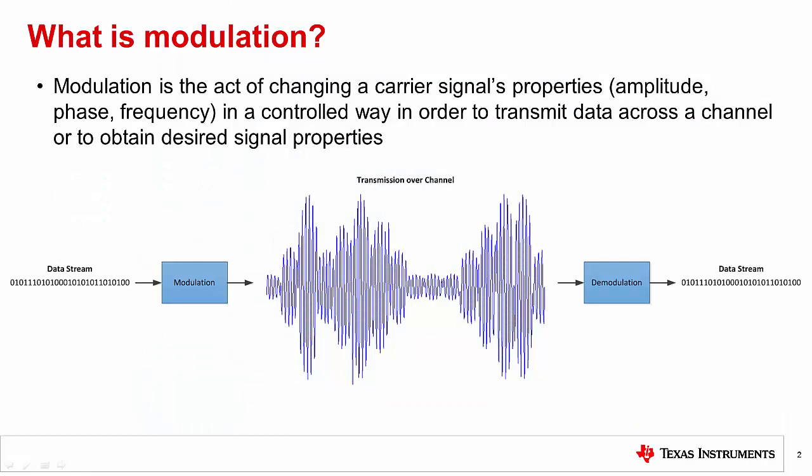First, let's discuss basic modulation. Modulation is the act of changing a carrier signal's properties, such as amplitude, phase, or frequency, in a controlled way in order to transmit data across a channel or to obtain desired signal properties.